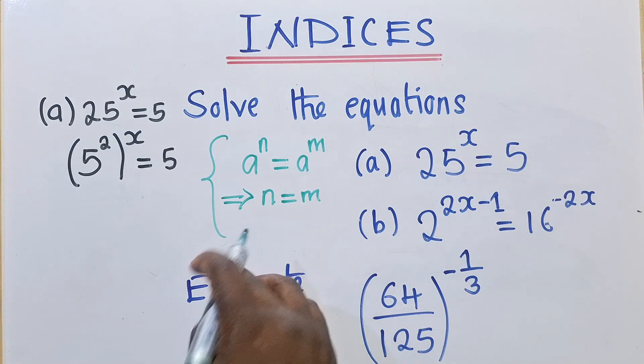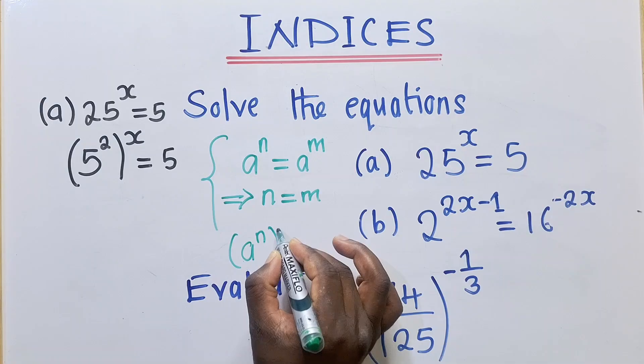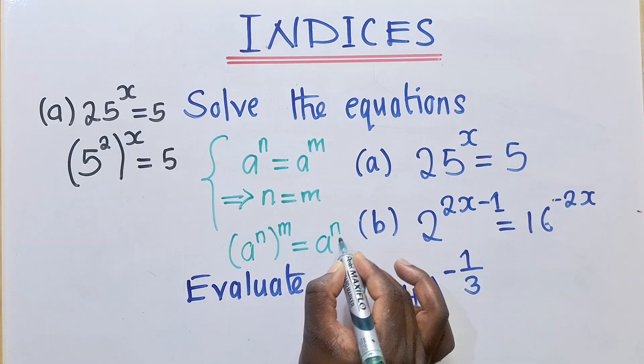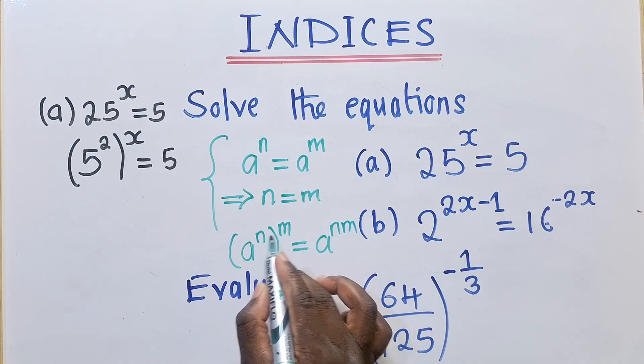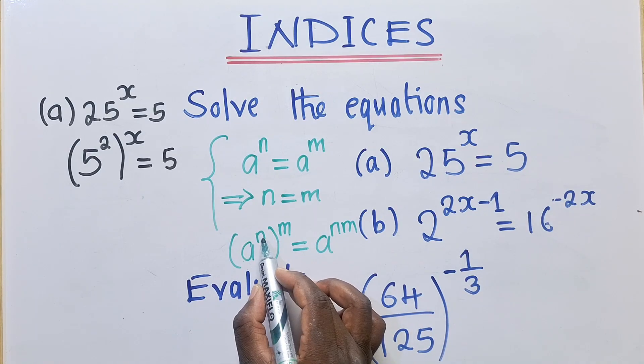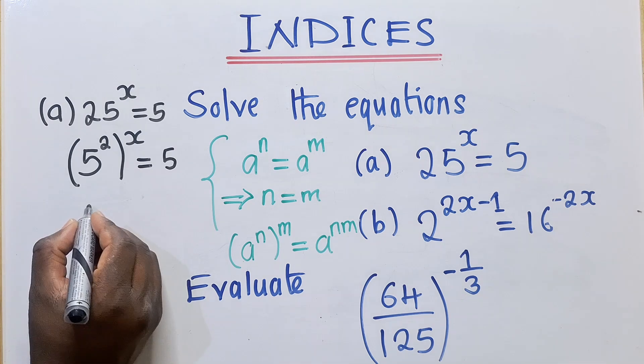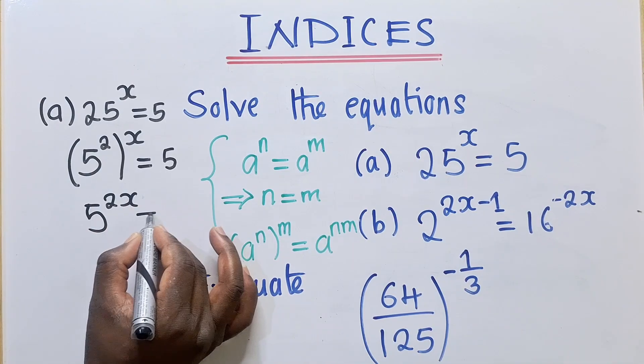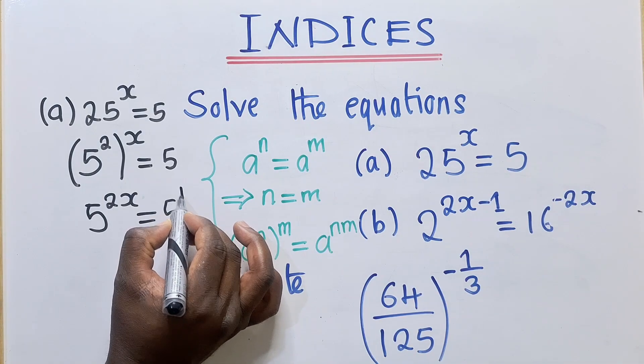Another property looks like this. It says when you've got A power N power M, this simply means, this is equal to A power N times M. So you can multiply the powers, provided there are brackets like this. You can multiply this power times this power, and this is how they come out. So if we can see what we have here, it's called power to power. So you multiply the powers. This will be 5 power 2X is equal to 5.